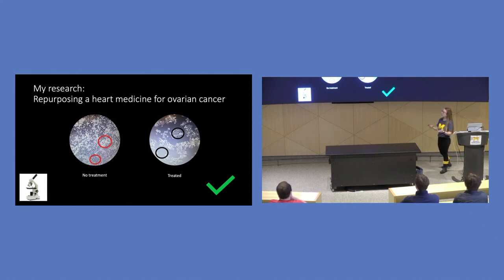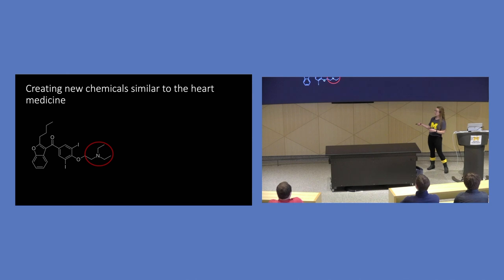But as you can imagine, this original drug was made to help with the heart. So this is actually called amiodarone. It's meant to stabilize the heart rhythm. So if we were to give a heart medicine to a patient with ovarian cancer that does not have a heart problem, can you identify any potential side effects? Could maybe affect their heart, right? And they don't need that.